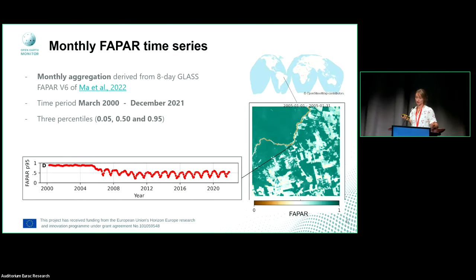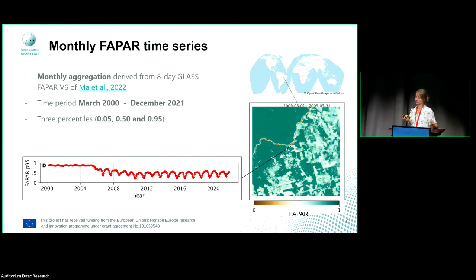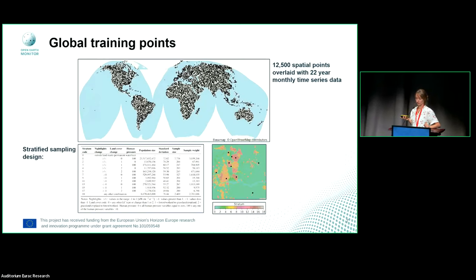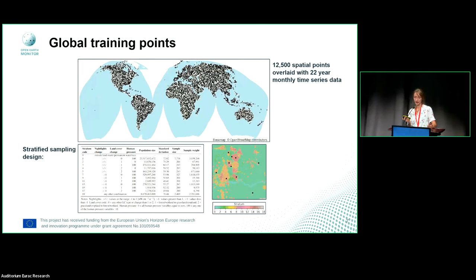The monthly FAPAR time series was aggregated from the GLASS FAPAR version 6, covering the period March 2000 to end of 2021. For the global training points, they're very well distributed over the globe. We didn't just randomly sample — we used a stratified approach to make sure we also cover specific areas of human impact, land cover change, and areas where human pressure is very low.